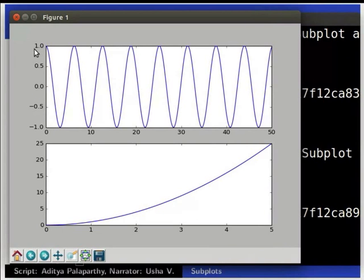For the parabolic curve, x axis varies from 0 to 5 and the y axis varies from 0 to 25.